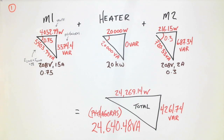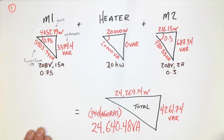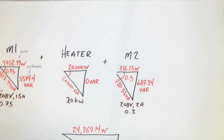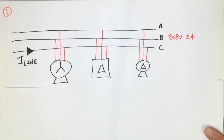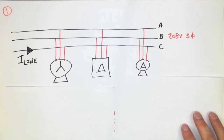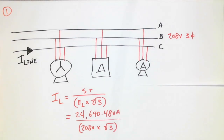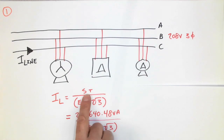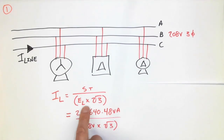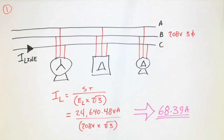The last step is to work out the total line current. So let's go back to our question and calculate the total line current. The total line current is determined by the total S of the circuit divided by E line times root three. We go through the whole process and end up with a line current value of 68.39 amps.